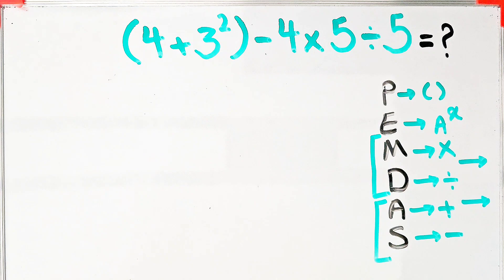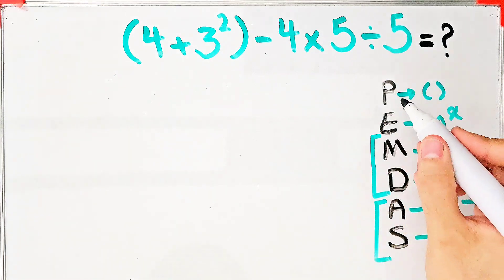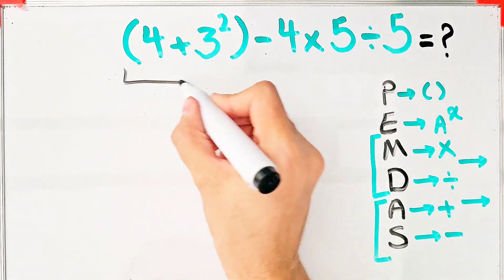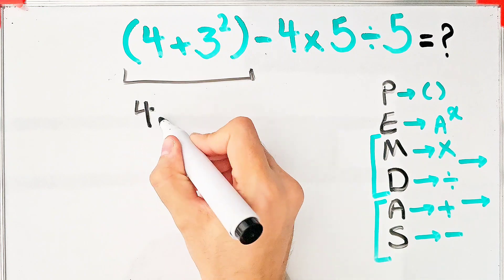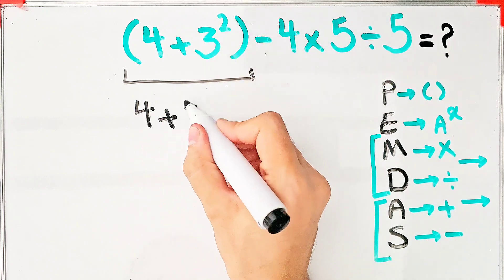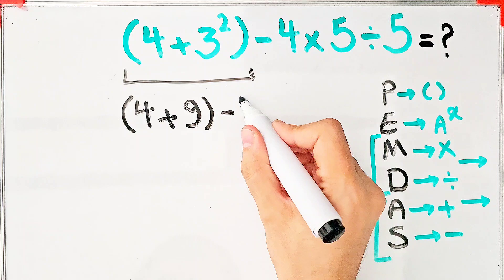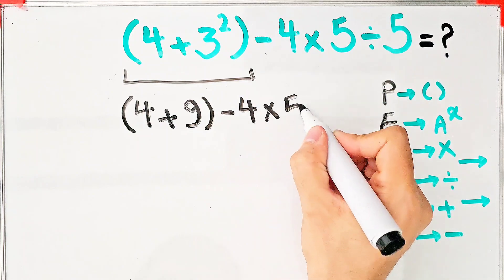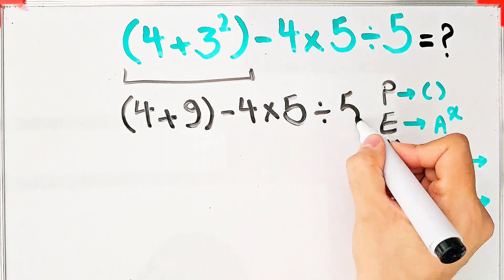According to the PEMDAS rule, first, we simplify the parentheses. We have 4 plus 3 to the power of 2, that equals 9, and we have 4 plus 9 inside the parentheses, and the question is, 4 plus 9 minus 4 times 5 then divided by 5.